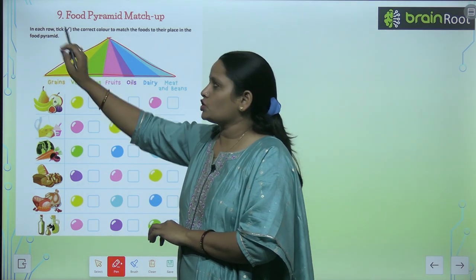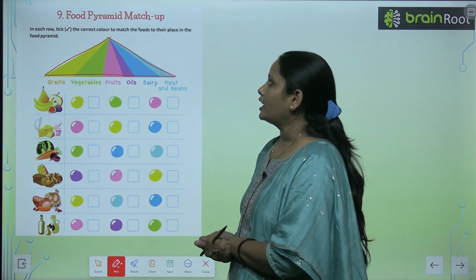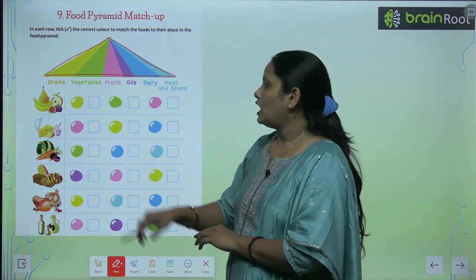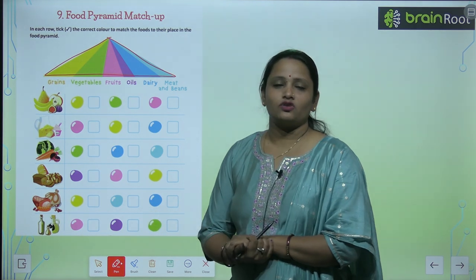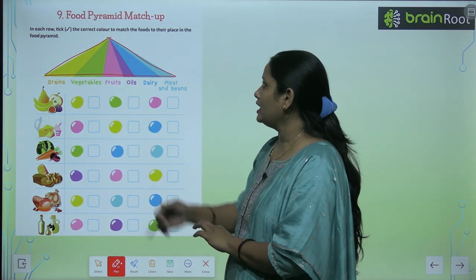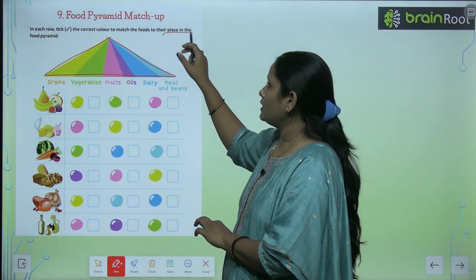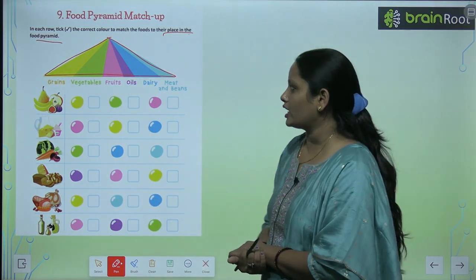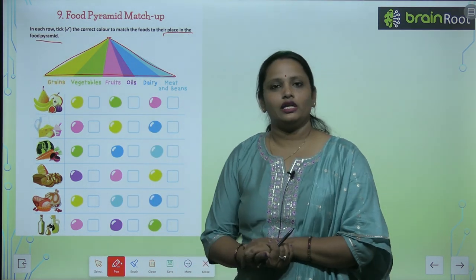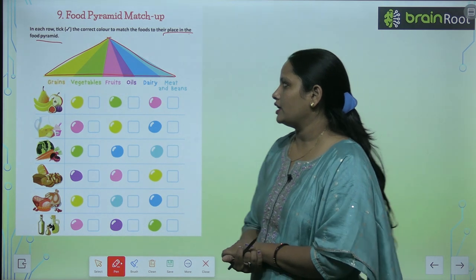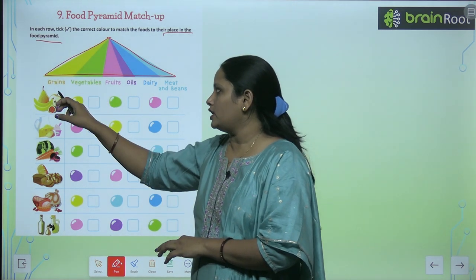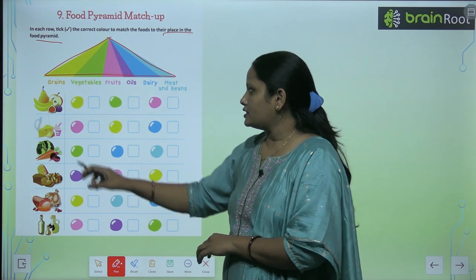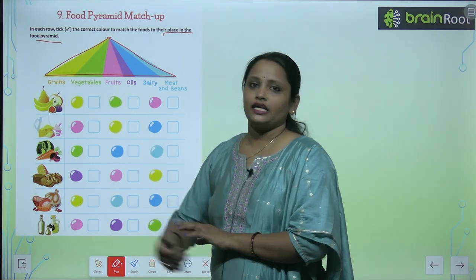In each row, take the correct color to match the food. We give some colors according to their places in the Food Pyramid. In the Food Pyramid we see names and colors, and then we click on them. For example, this yellow color — where you can see yellow — what are the grains?